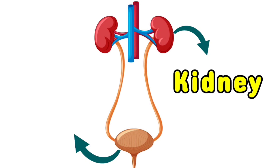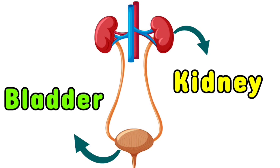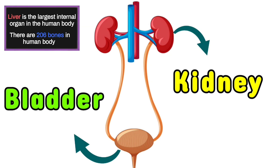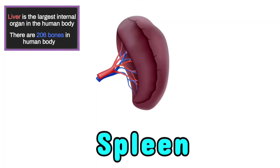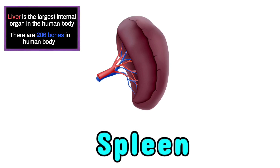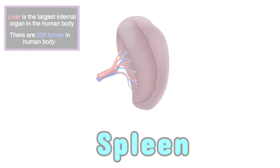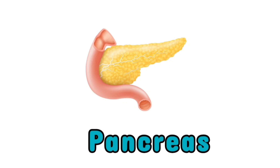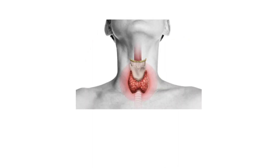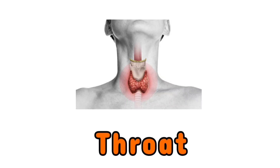These two red organs are your kidney. And this brown one, bladder. This is spleen. This yellow organ is pancreas. This is your throat.